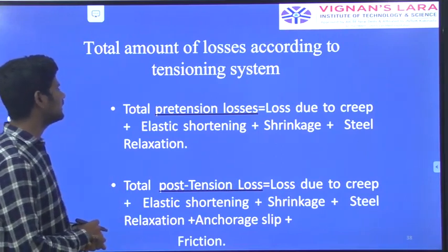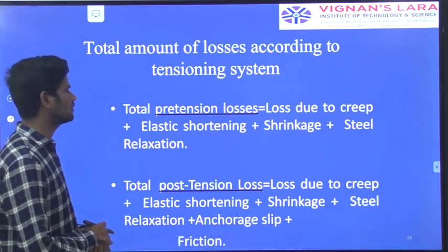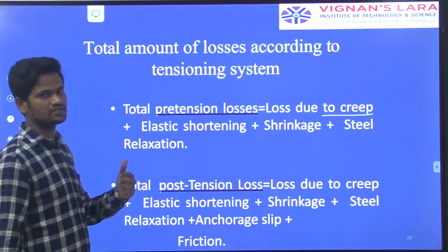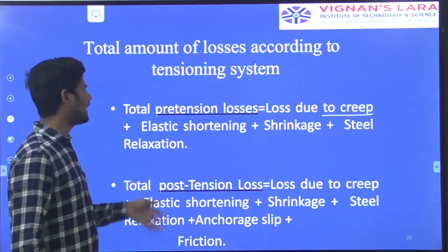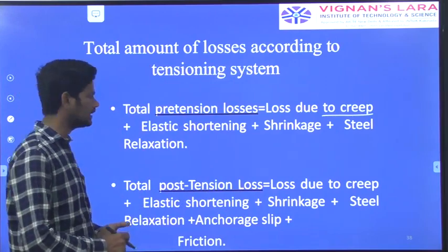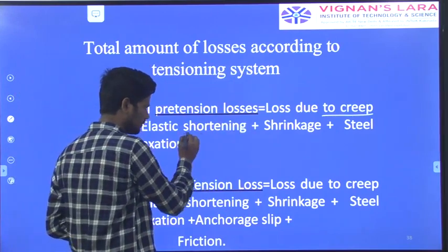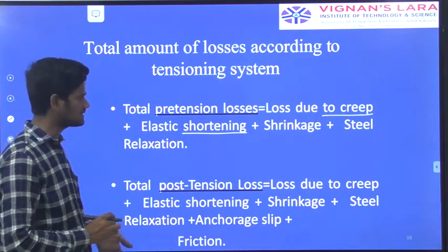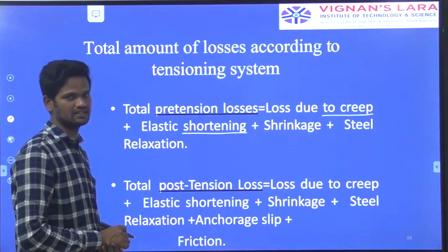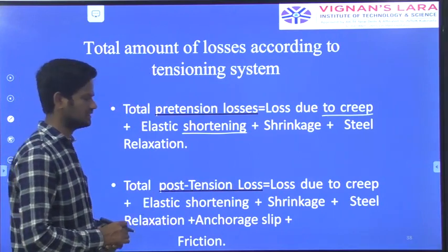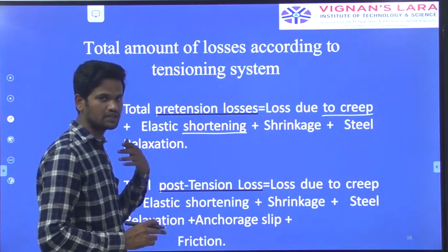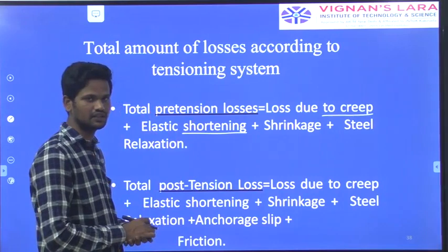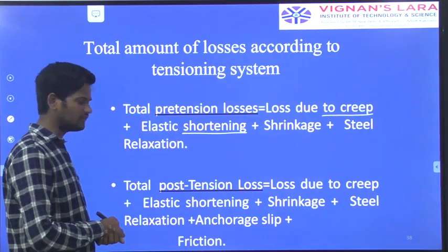The total pre-tensioning losses will be equal to the loss due to creep of concrete — creep is constant stress under sustained strain — and elastic shortening of the concrete. The first one is the loss due to creep as well as elastic shortening. Next, we have shrinkage losses, and then steel stress relaxation. These are the different types of total losses we are going to finalize under pre-tensioning losses.